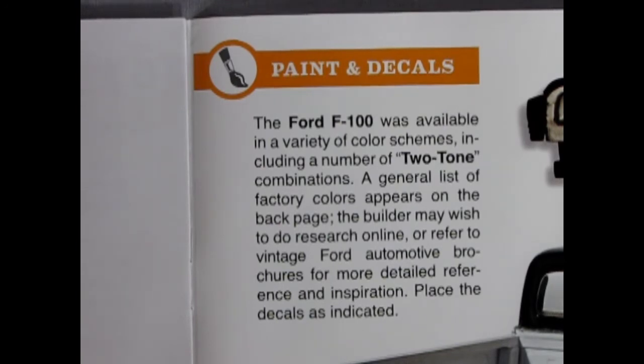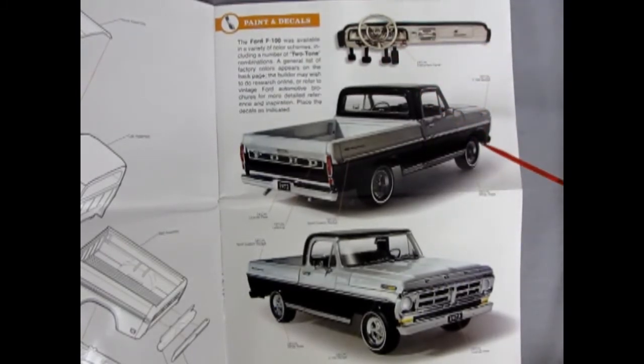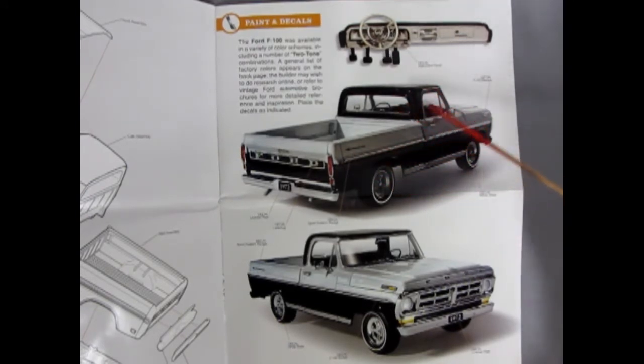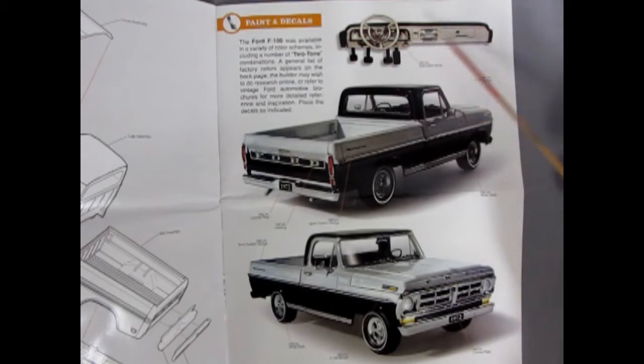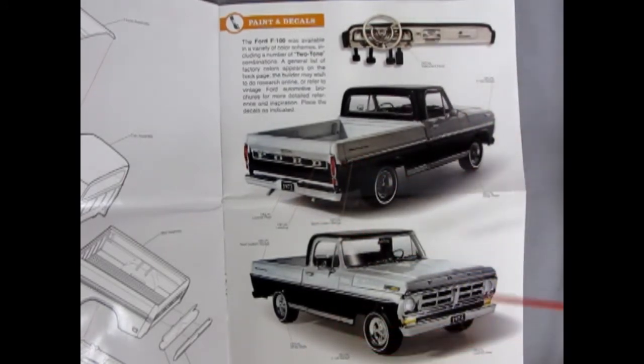Place the decals as indicated. And here Mobius has given us some paint suggestions and as you can see we've got a black along the bottom and a light silver gray up top as well as a black roof. And here's all our decal placements on the dashboard and the body, license plates, and everything else.